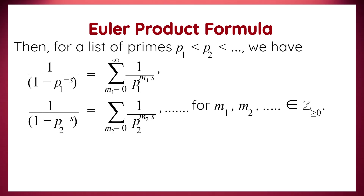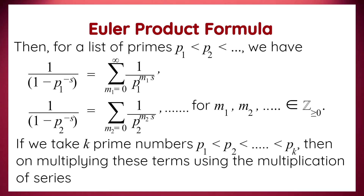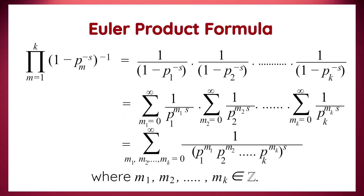Using this for a sequence of prime numbers p1, p2, p3, etc., we write the series expansions for each reciprocal of 1 minus p to the power minus s. On multiplying these terms altogether for k prime numbers p1, p2, up to pk, by using multiplication of series, we get the product equal to the sum over all m1, m2, up to mk from 0 to infinity of 1 divided by p1 to the power m1, times p2 to the power m2, times up to pk raised to the power mk, all raised to the power of s.